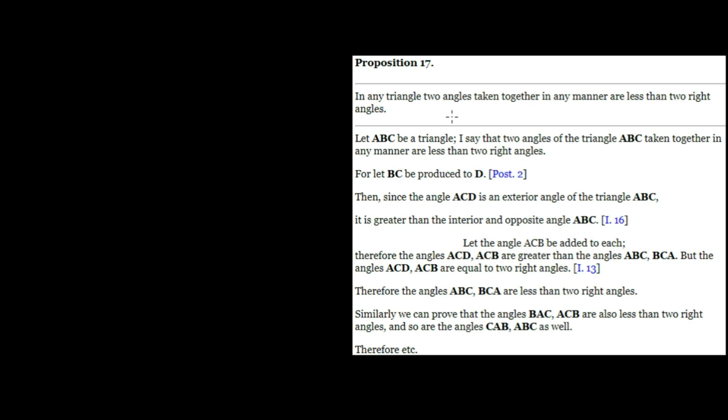So, if you have a triangle, take any two of those angles. Those are guaranteed to be less than two right angles. And let's set this up.